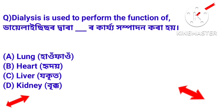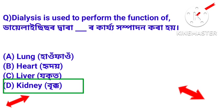Next question: dialysis is used to perform the function of which organ? Answer: Kidney. Dialysis is used to perform the function of the kidney.